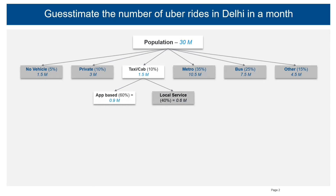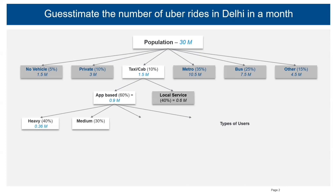Next, I've applied a filter for types of users. I've split the users into four categories: heavy user, medium user, light user, and occasional users. The split I've taken is 40%, 30%, 20%, and 10% respectively.